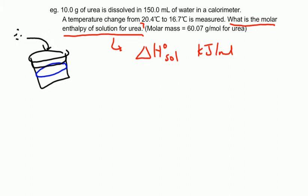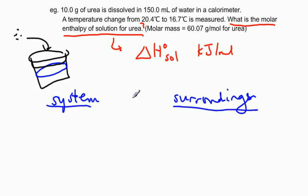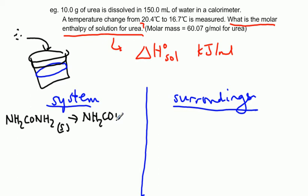Before we go any further, it's important that you think carefully about what is our system and what are the surroundings. We want to keep a separation between those two in our minds. So the system is the chemical system that's undergoing the transformation. In this case, it's urea. Solid urea is being dissolved. So solid urea is undergoing a transformation into aqueous urea. That's the process that's happening that's causing there to be some kind of energy change.